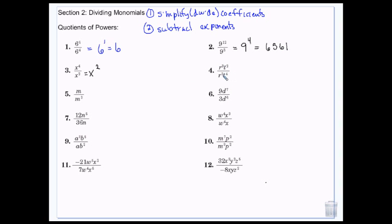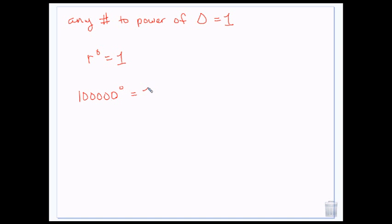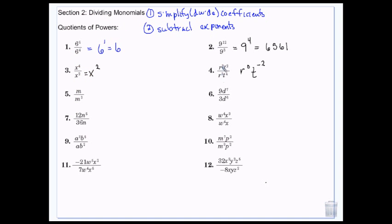3 minus 3 is 0. Anything to the power of 0 equals 1 — R to the 0 equals 1, 100,000 to the 0 equals 1. Here's why: R to the 3rd divided by R to the 3rd — they're the same, and anything divided by itself equals 1. So that goes away.